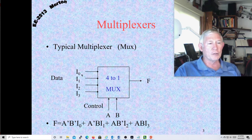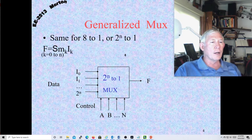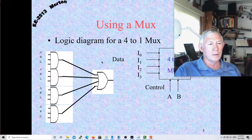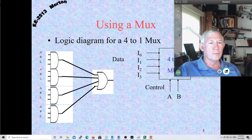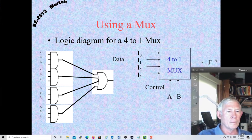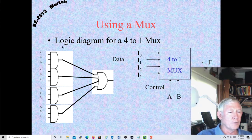So it's a digital multiplexer: digital in, digital out, digital control lines. A generalized multiplexer is a 2^n-to-1, where you have 2^n inputs and n control lines, and one output F. Here's a 4-to-1 mux — you can see we have four AND gates and one output OR gate. So it's very much a sum-of-products type structure.